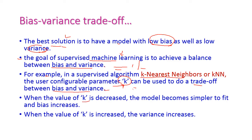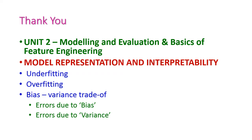When the K value is decreased, the number of nearest neighbors decreases and the model becomes very simple to fit, hence the bias will increase. When the K value is increased, then variance will increase. So far we have seen model representation and interpretability, including underfitting and overfitting, and the bias and variance trade-off — that is, error due to bias and error due to variance, and how to overcome all those things. In the next class, we will see another important topic from the second unit. Thank you.